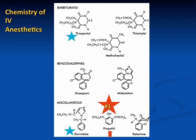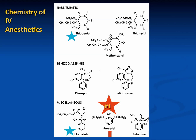Looking at the chemistry of IV anesthetics: propofol is a phenolic compound, etomidate is a carboxylated imidazole, and thiopental is a barbituric acid derivative. Thiopental has a sulfur molecule in it — the thio component — while methohexital is also derived from barbituric acid but has an oxygen in it, making it an oxybarbiturate.